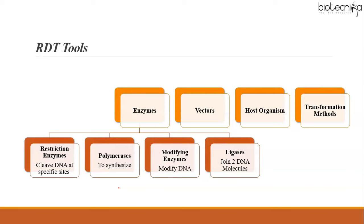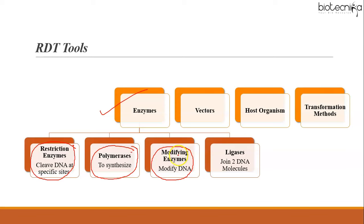Recombinant DNA technology requires several tools: enzymes, vectors, host organisms, and transformation methods. The enzymes used include restriction enzymes that cleave DNA at specific sites, polymerase enzymes that synthesize DNA, modifying enzymes that modify DNA — especially needed when constructing cDNA or genomic libraries — and ligase enzymes that join two DNA molecules together.